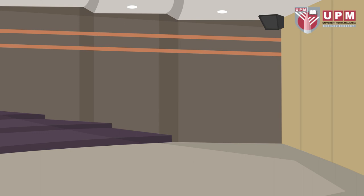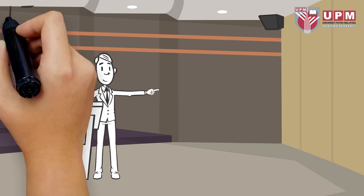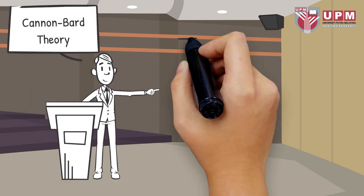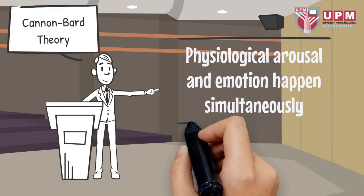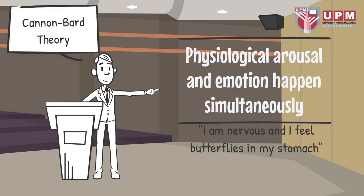Now let's talk about Cannon-Bard theory. Physiological arousal and emotion happen simultaneously. The body's physiological system and the emotional experience are independently activated at the same time. For example, I'm nervous and I feel butterflies in my stomach.